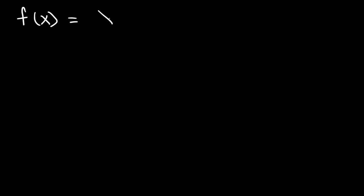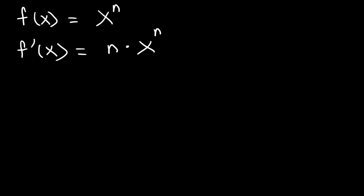In this video we're going to focus on the power rule for derivatives. If we have some function f of x equal to a variable raised to a constant — x raised to n, where x is the variable and n is the constant — then according to the power rule, the first derivative equals n times x raised to the n minus 1.